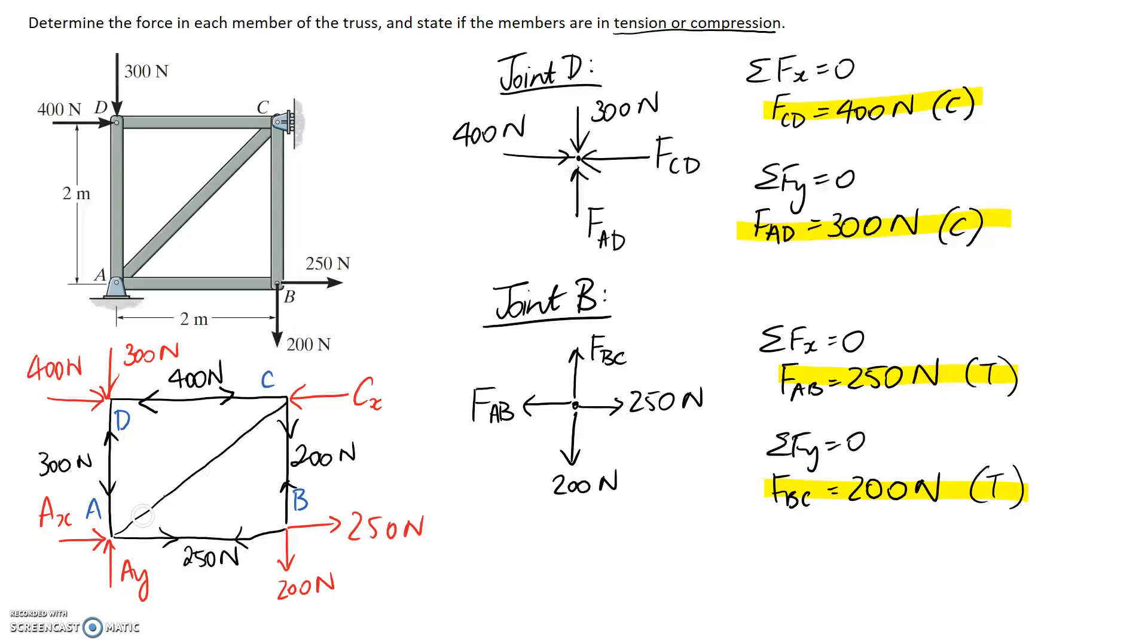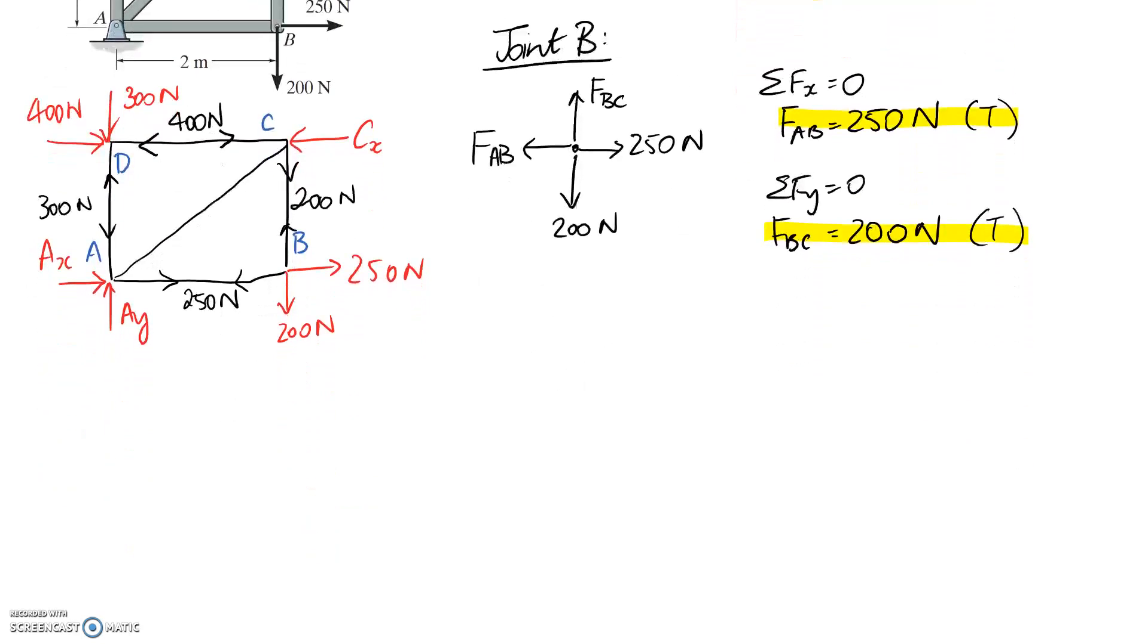The only other one that we need is this diagonal member. And we can get it from looking at joint C, I think is the next choice. So if we look at this joint, we only have the member that we need to determine, and the reaction as the two unknowns. Alternatively, if you try to look at point A though, you currently don't know AX, AY, or the member. So that's three unknowns, that's too many to solve it directly. So good decision is to go with C.